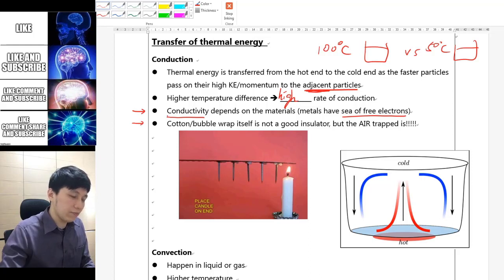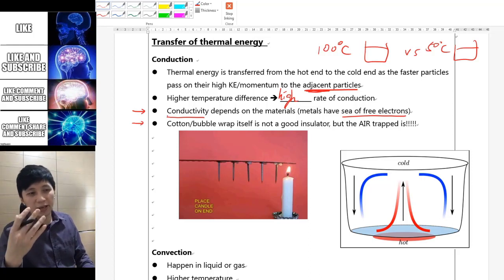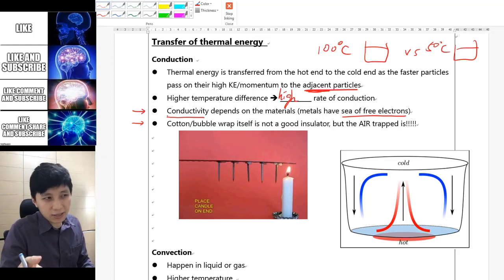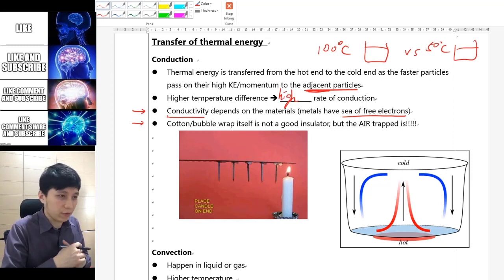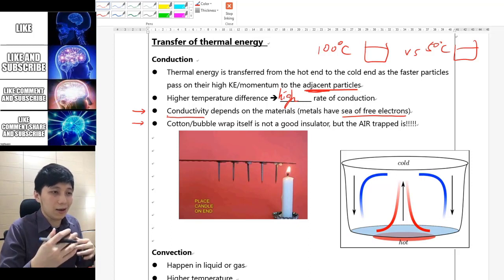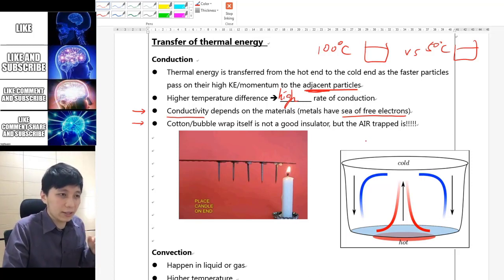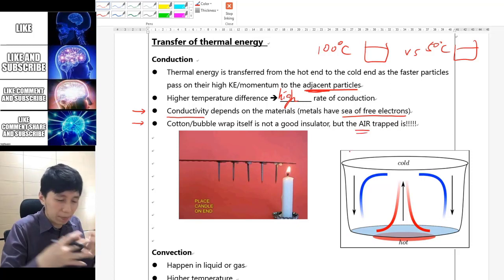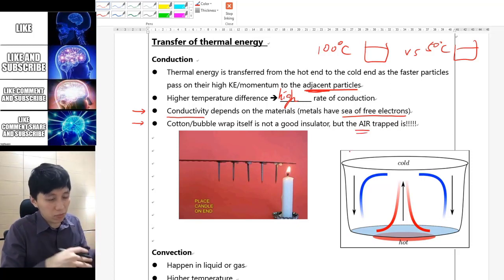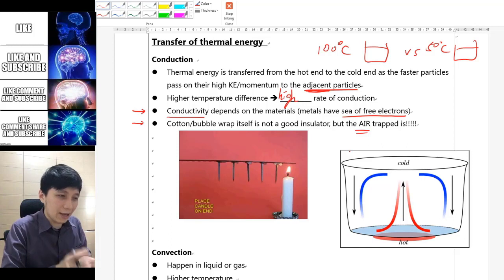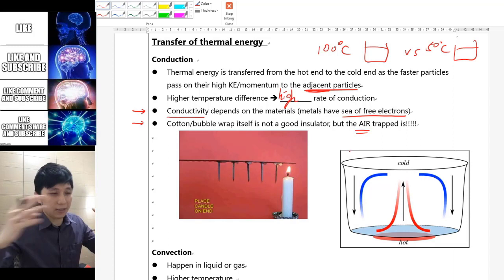And the last one is something that I deliberately added because I found this is somehow a misconception from my previous students. They thought bubble wrap or cotton is a good insulator, but they're actually not. The key idea of why they are good insulators is that the air is trapped inside so the air cannot move, and so that makes these materials a good insulator as a whole.